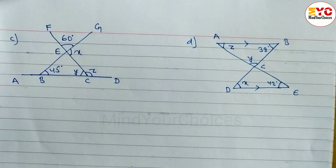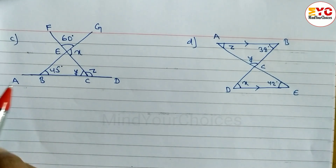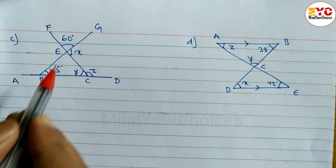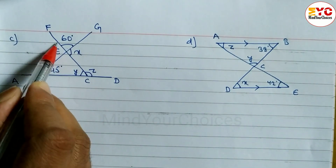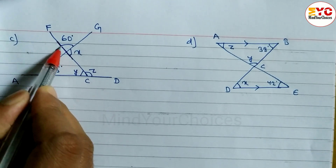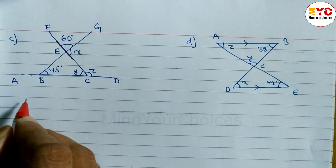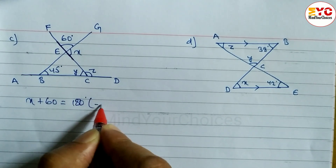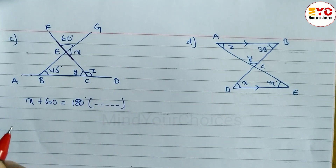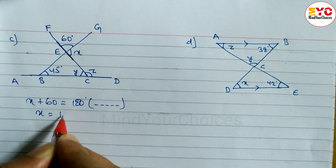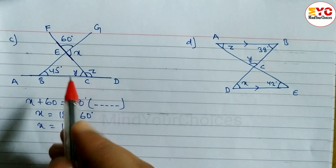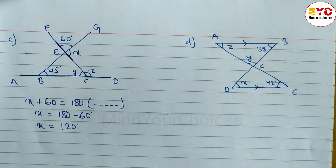Now look at question number C. Here we have to find out the value of x, y, and z. X is visible on the diagram, and x plus 60 is equal to 180 degrees — reason: being a straight angle or being a straight line. So x is equal to 180 minus 60 degrees. When you subtract, we get x is equal to 120 degrees.